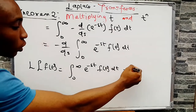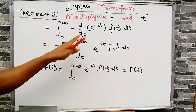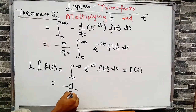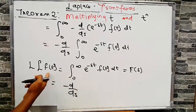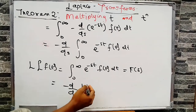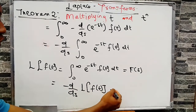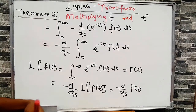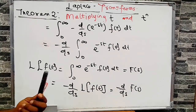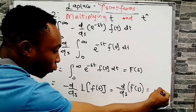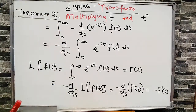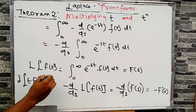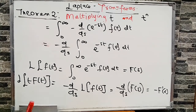Substituting F(s) for the integral, we get minus d/ds of F(s), which we can also write as minus F'(s). This completes the proof that the Laplace of t·f(t) equals the negative of the first derivative of F(s). The same logic extends: the Laplace of t^n·f(t) equals the nth order derivative with appropriate sign, so let's now take an example.